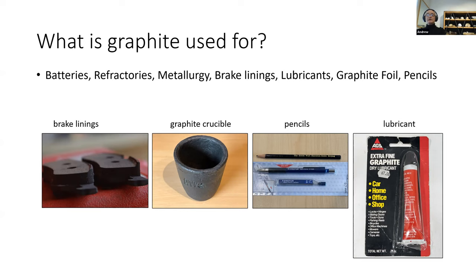There's a picture of brake linings where the graphite is incorporated in the product and actually used as the product — which is one of the reasons wheels go black with the dust coming off. Graphite crucibles are used to pour metal into, but the graphite then gets used up, so it doesn't go into the final product. And then of course pencil lead and lubricants — things that are around us every day.